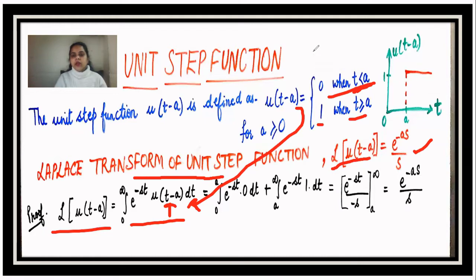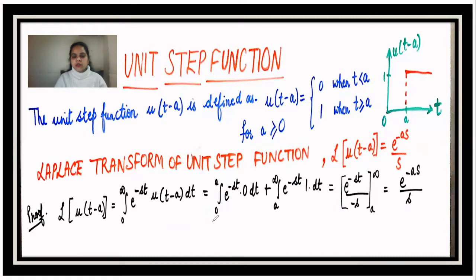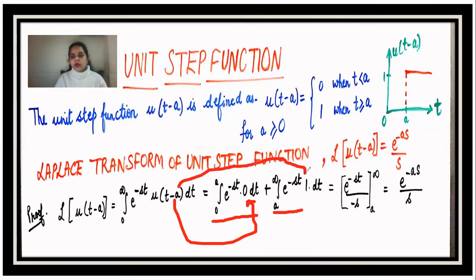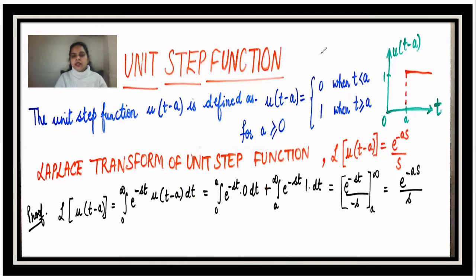We break the integral into two parts: the first integral is from zero to a, where u(t - a) equals zero, and the second is from a to infinity, where u(t - a) equals one. Substituting these values, the first integral is multiplied by zero and is therefore equal to zero, so we are left with only the second integral.